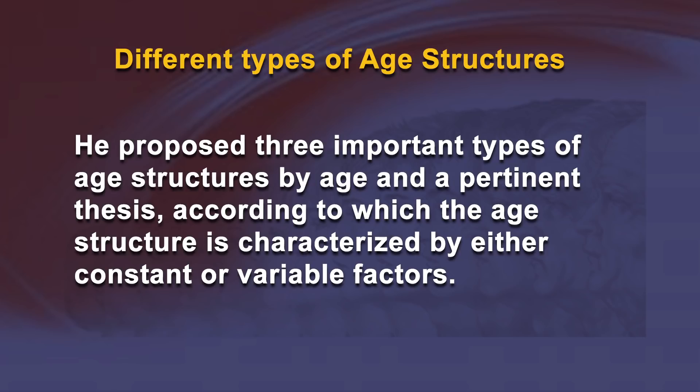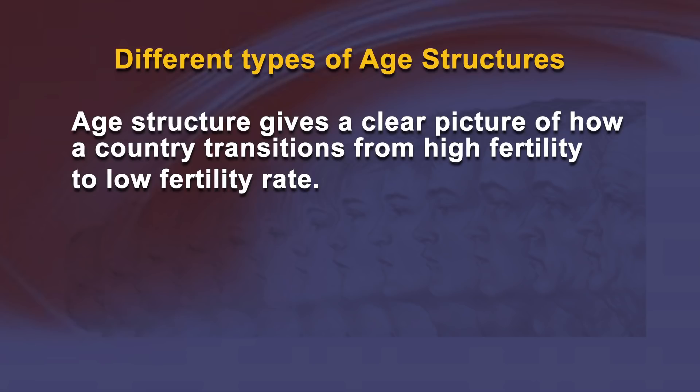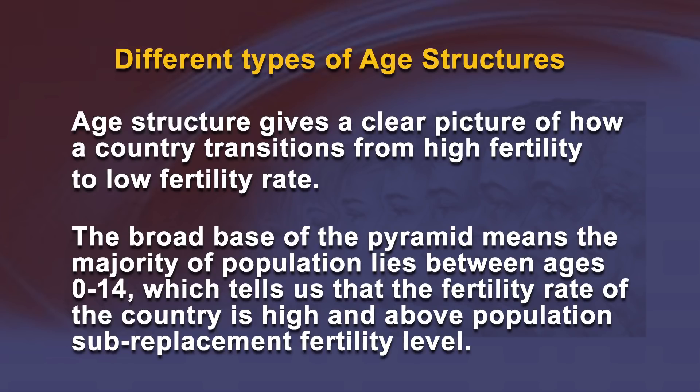Different types of age structures: Types of population composition by age are important for the history of demographic conditions. Swedish demographer Gustav Sundberg proposed three important types of age structures, arguing that age structure is characterized by either constant or variable factors. Age structure gives a clear picture of how a country transitions from high to low fertility. A broad base of the pyramid means the majority of the population lies between ages 0 to 14, indicating a high fertility rate. The older population declines over time due to shorter life expectancy, though there are still more females than males in older ranges since women have a longer life expectancy.